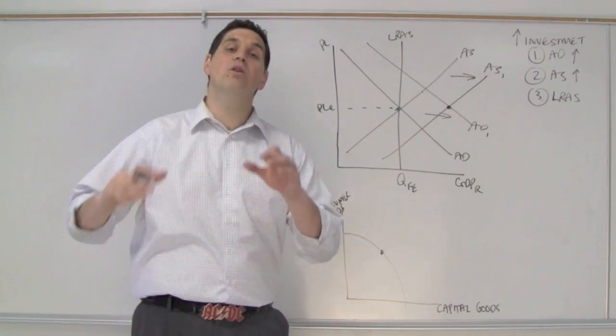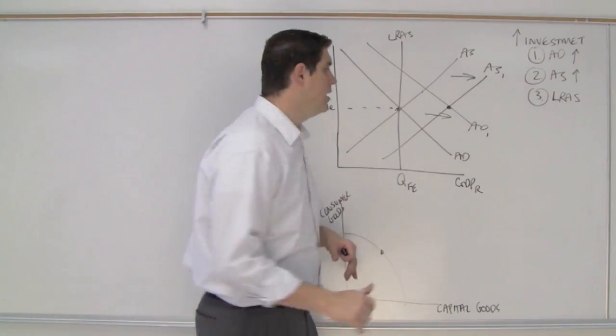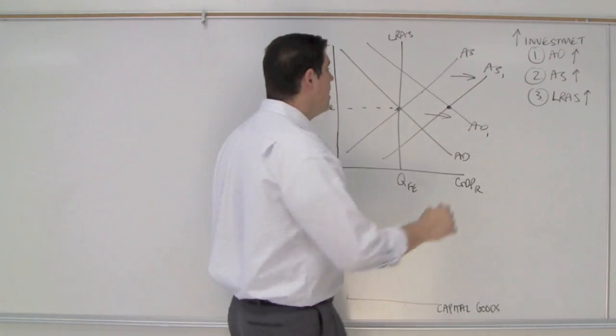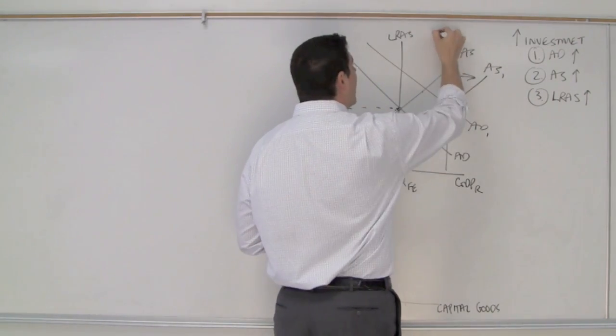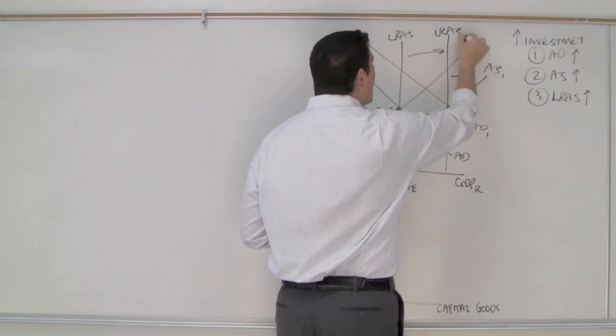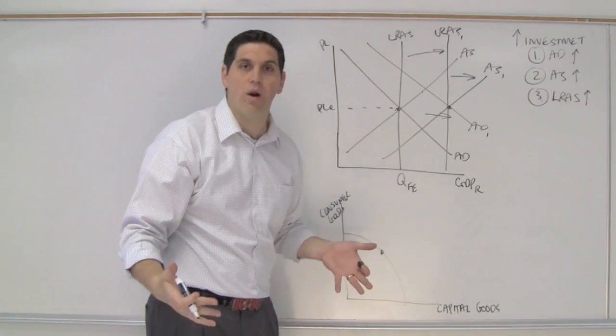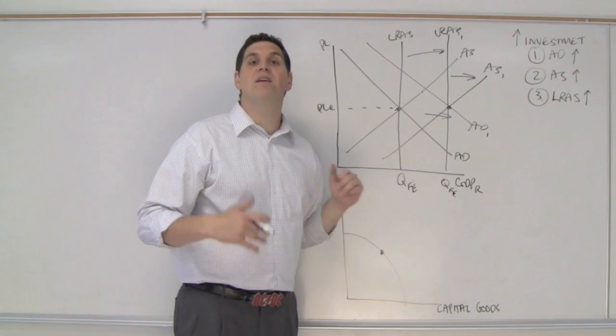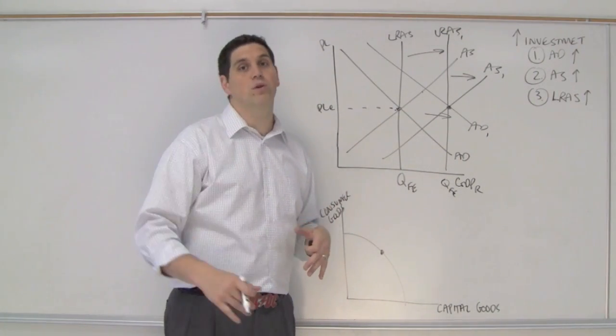Next question is what happens to the long run aggregate supply? The answer? It's going to go up. This is called economic growth. The reason why the long run aggregate supply increases is because now we can produce more than we ever could before. The new output that we're going to produce in the long run is now greater than it was before because now we have more machinery, more capital, more tools.